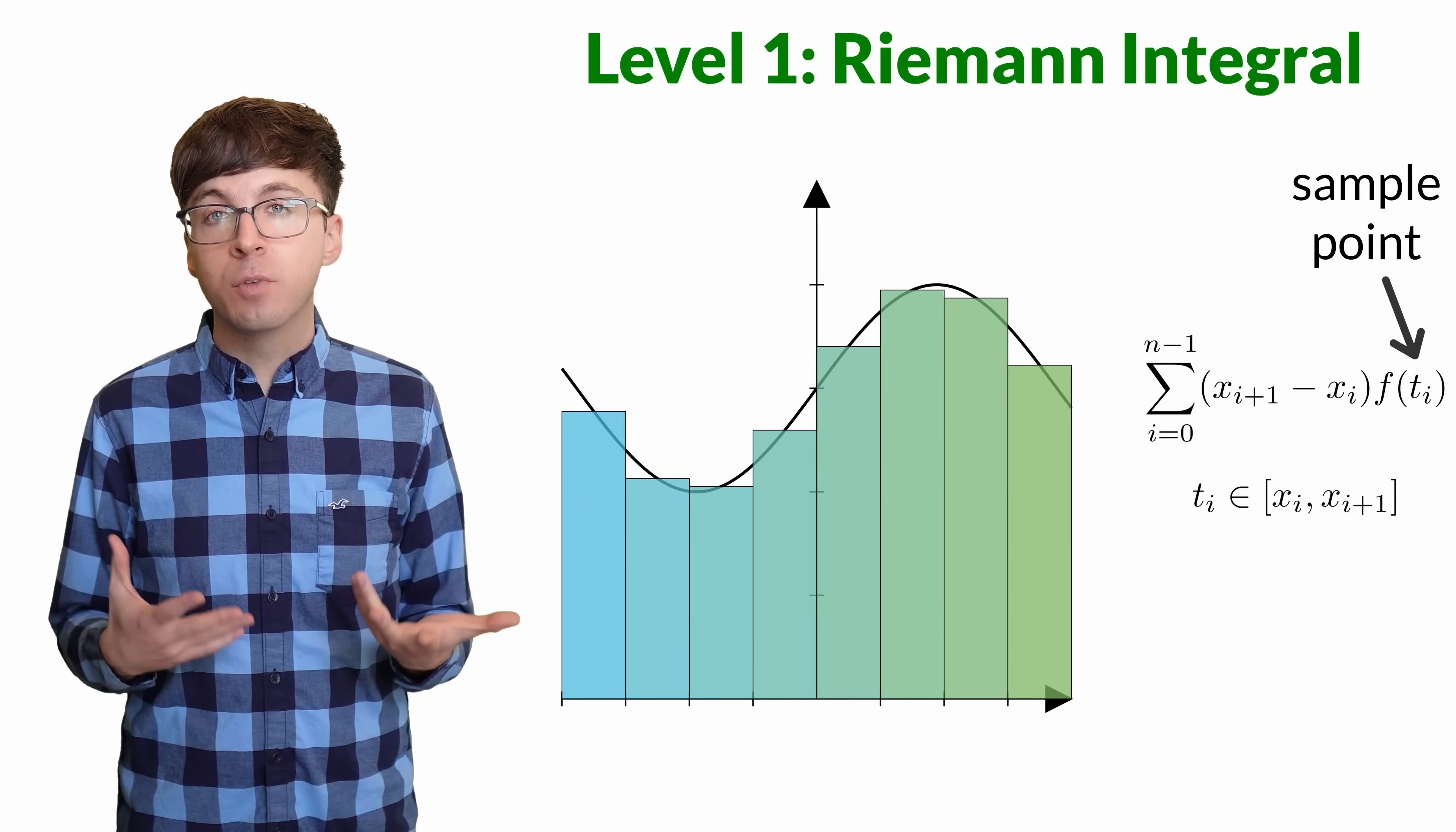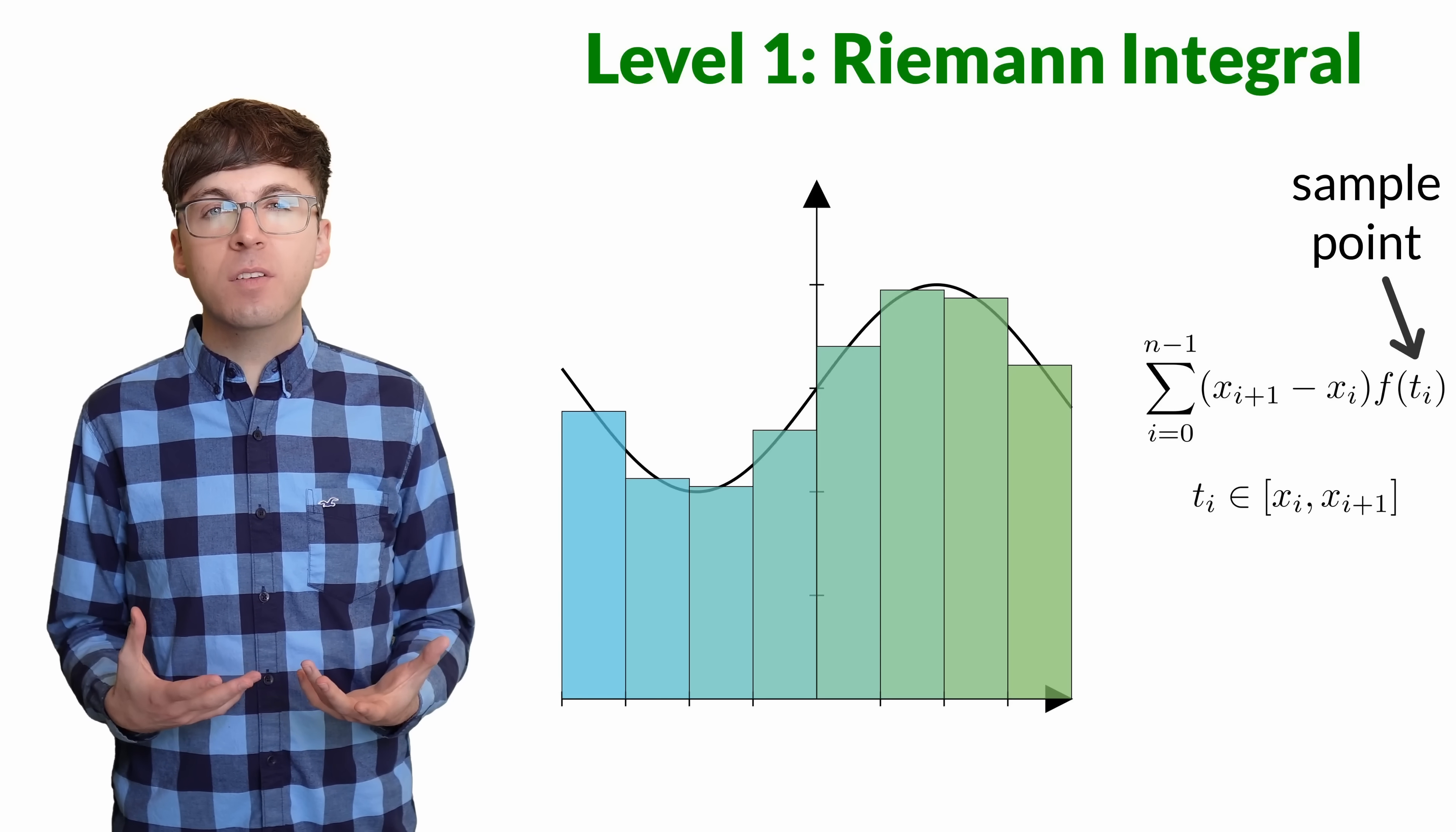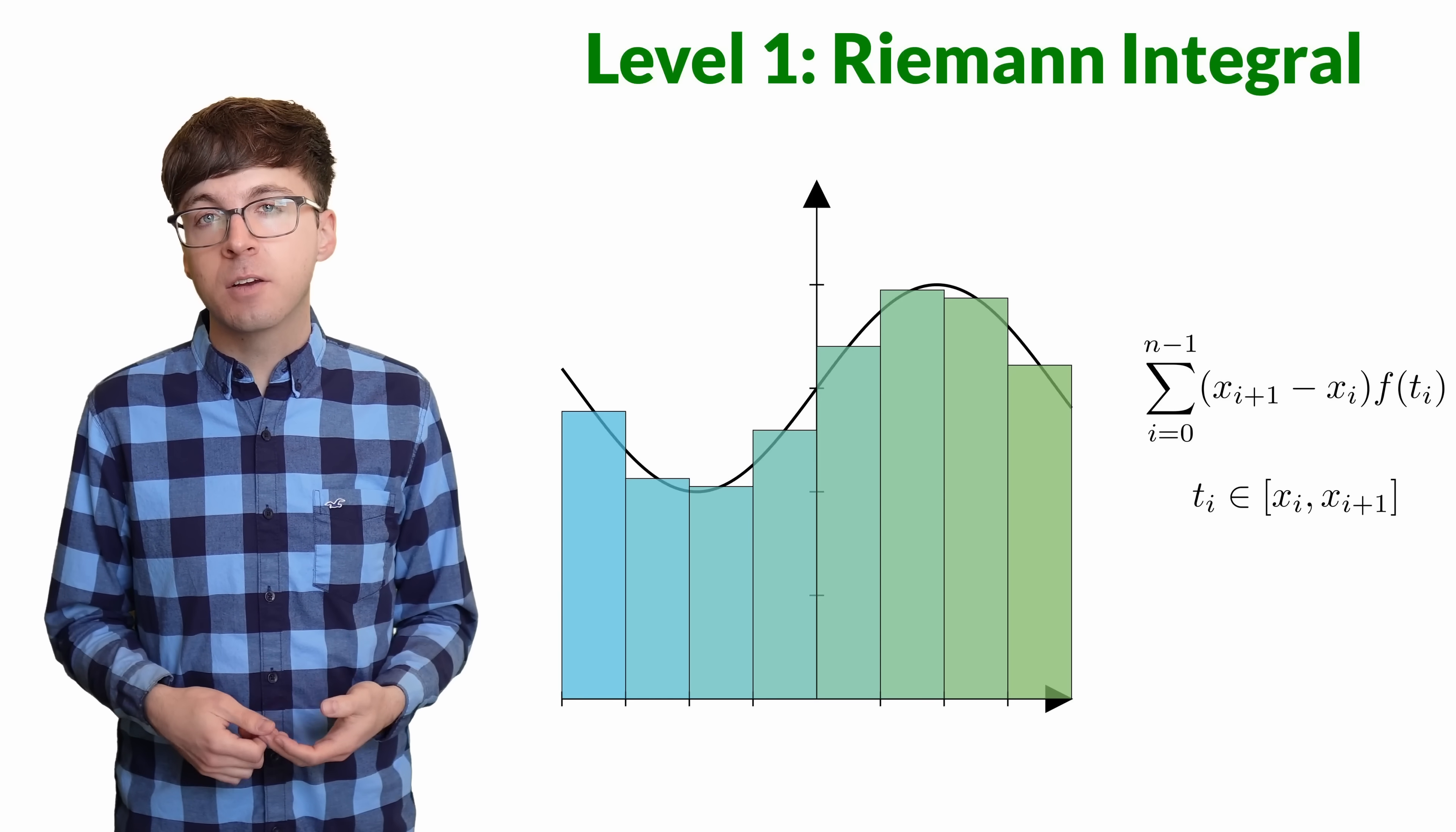We sample the function f at this x value to get the height of the rectangle. Adding up the areas, we get a Riemann sum. To get a better approximation of the area, we need to use more rectangles.